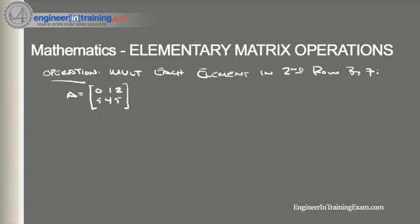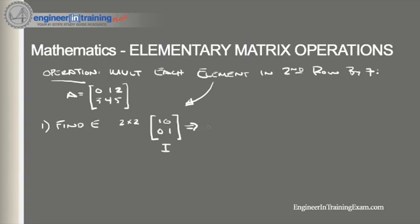To find E we apply the operation to an r by r identity matrix. Since there are two rows, our identity matrix is a 2x2 identity matrix: 1, 0, 0, 1. We then multiply each element in the second row by 7, giving us the elementary row operator E: row 1 is 1, 0 and row 2 is 0, 7.